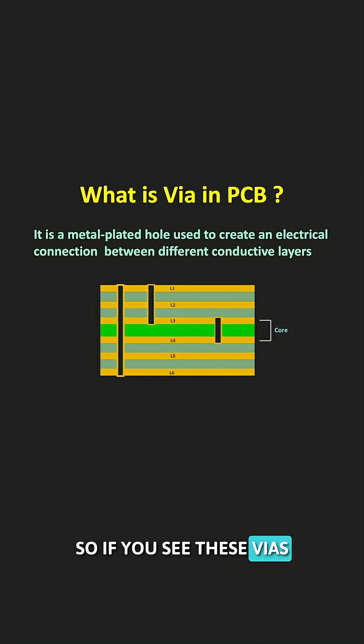Vias carry the electrical signal between the different layers of the PCB. It is a copper plated hole which creates the electrical connection between the different layers of the PCB.